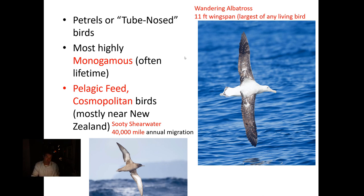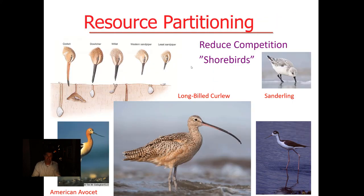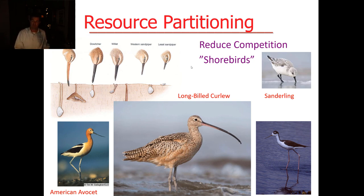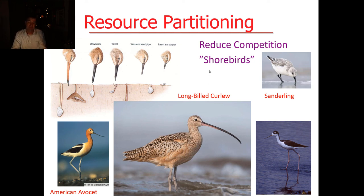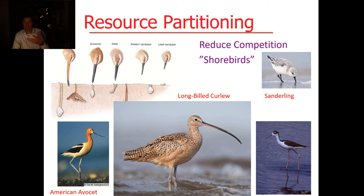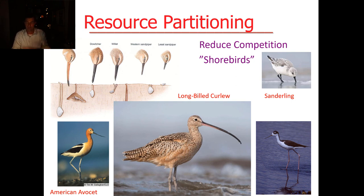The last group I'll mention are collectively called shorebirds. Those include things like the American avocet, the long-billed curlew, the black-necked stilt, and the tiny sanderling — cool ones we have here in Southern California. You can see they all have very different beak shapes, and we call that resource partitioning. These birds probably evolved over time to have very different bill lengths, sizes, and shapes to reduce competition so they could access food that others can't. It's like having a specialized tool, and some birds are better at getting certain food than others. There are thousands of different shorebirds, but these are some of our local examples.